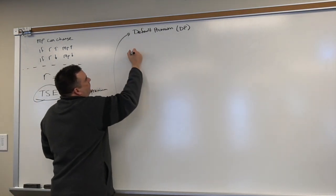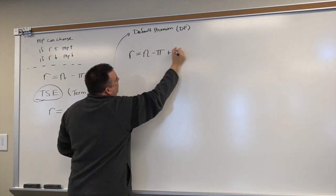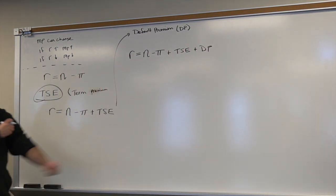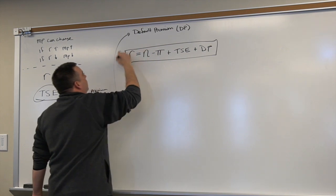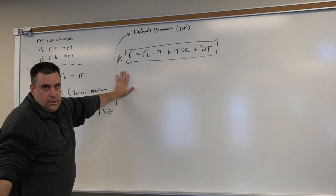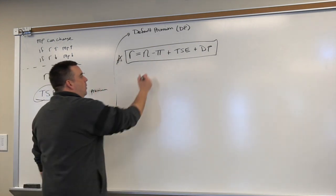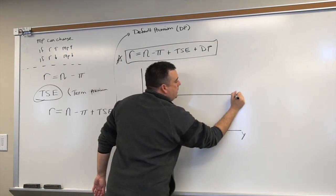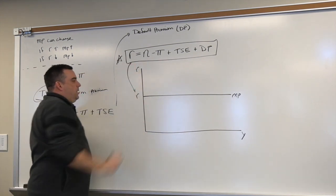We need to account for that as part of interest rate as well. So I want to rewrite my formula: R equals N minus inflation plus TSE plus DP. This becomes our formal, starred, if you will, mathematical representation of the interest rate. And it's this value as a numeric amount that is really shown on that MP function.